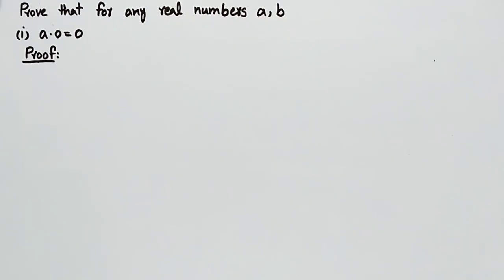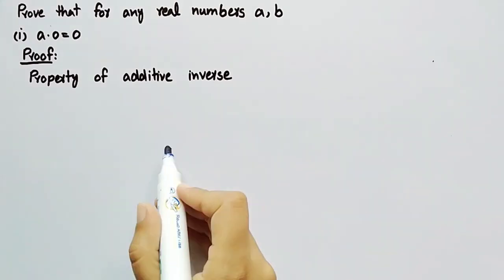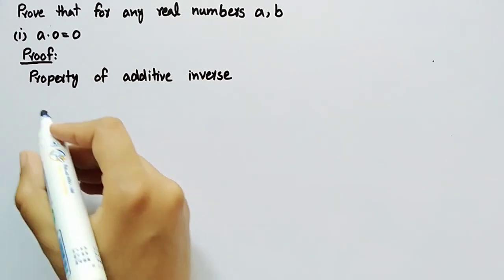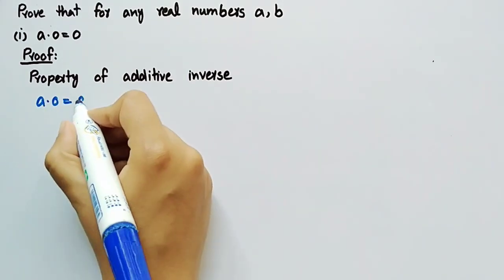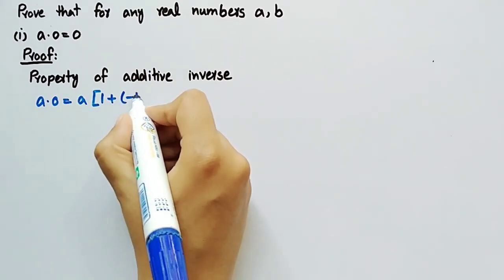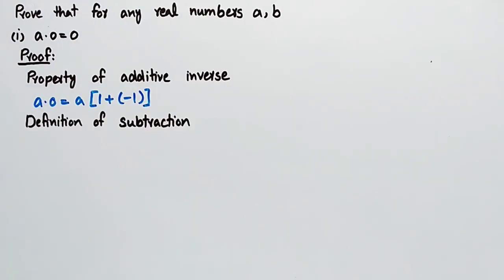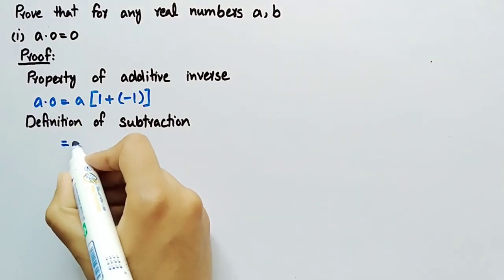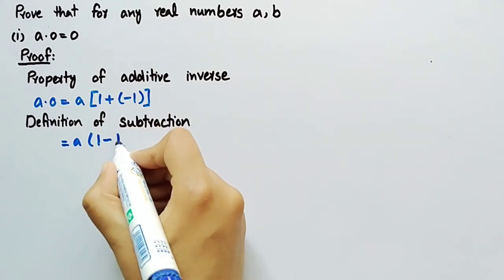Firstly, we will prove a·0 is equal to 0. By using the property of additive inverse, we can write a·0 equal to a multiplied by (1 + (−1)). By using the definition of subtraction, we can rewrite it as a multiplied by (1 − 1).